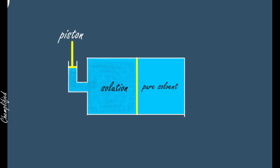Now let's understand osmotic pressure more clearly. Consider this diagram — this is your pure solvent, and this is your solution. The semi-permeable membrane allows only the solvent particles to move into the solution; the solute particles present in this container will not be allowed to go towards the pure solvent because of the semi-permeable membrane.